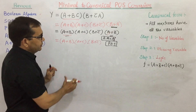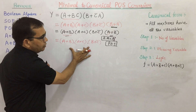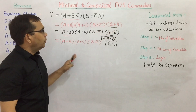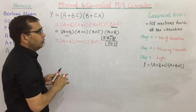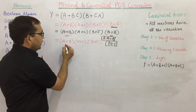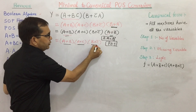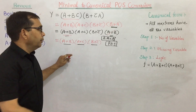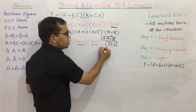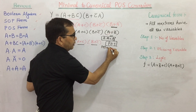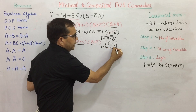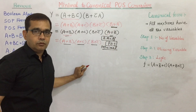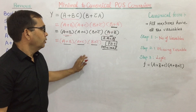This is the POS form — product of sums — because these are sums combined by a product. However, this is not a standard or canonical POS form. In canonical form, all max terms must have all the variables. These max terms are missing some variables. So this is a minimal POS form.